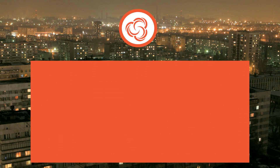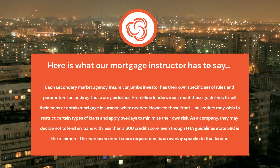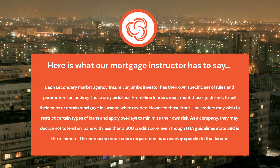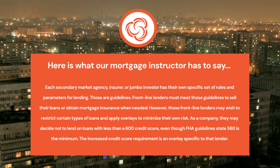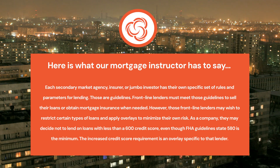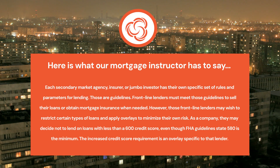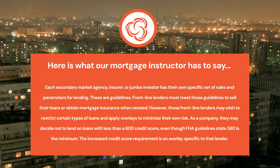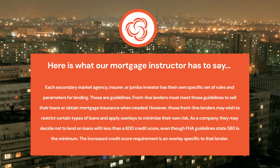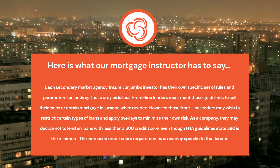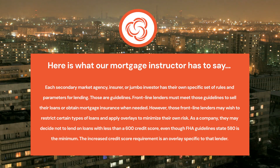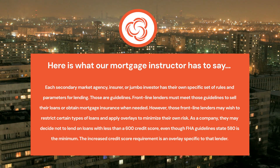Here is what our mortgage instructor has to say. Each secondary market agency, insurer, or jumbo investor has their own specific set of rules and parameters for lending — those are guidelines. Frontline lenders must meet those guidelines to sell their loans or obtain mortgage insurance when needed. However, those frontline lenders may wish to restrict certain types of loans and apply overlays to minimize their own risk as a company.